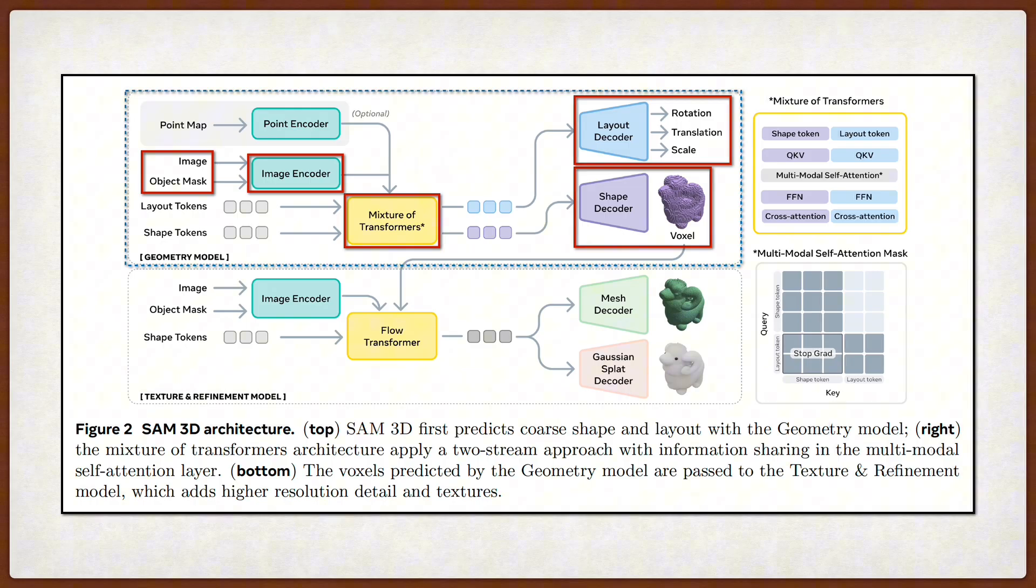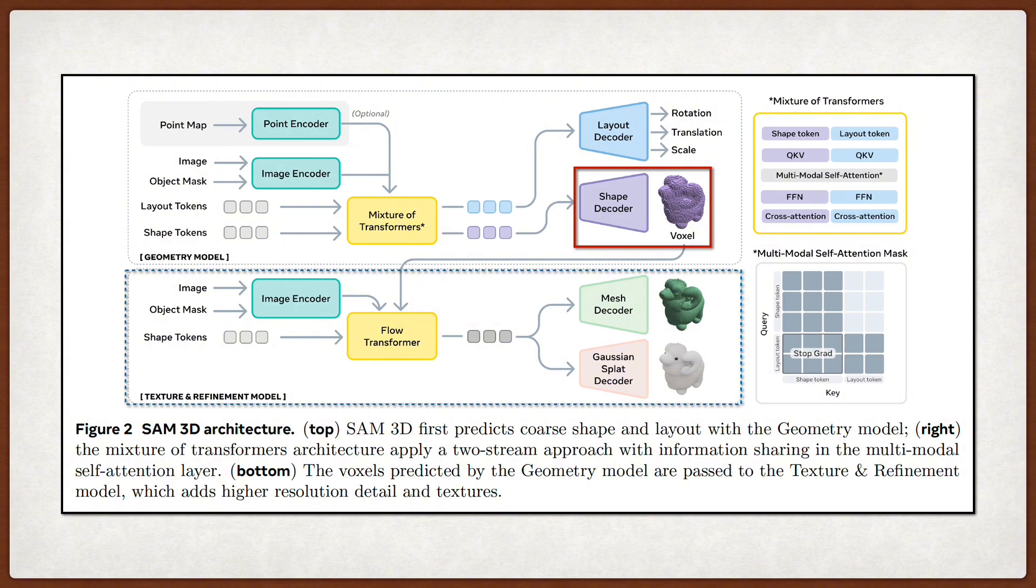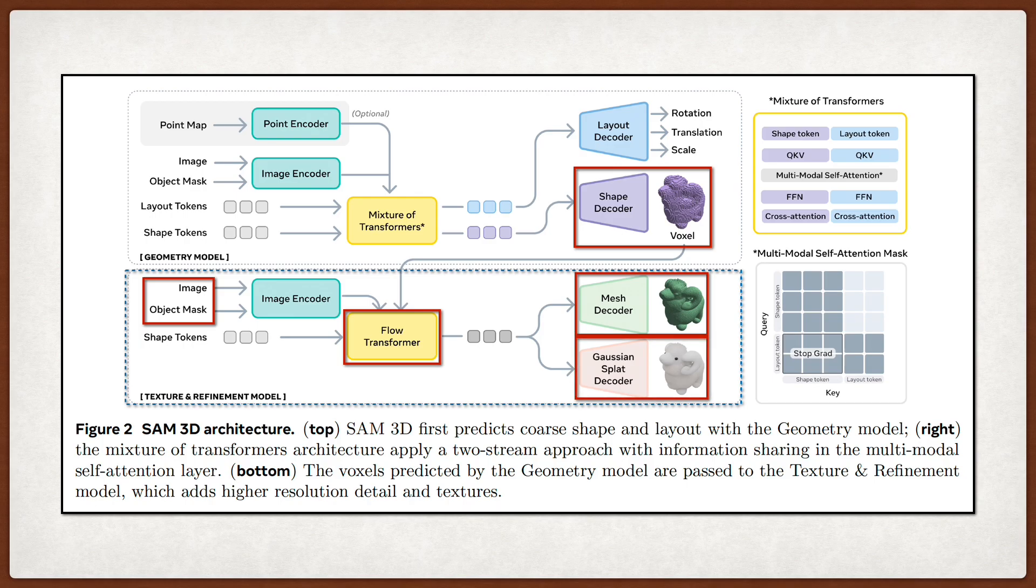Once you have that coarse geometry, the system passes it to the second stage, called the texture and refinement model. This takes the active voxels predicted by the first stage, and uses another sparse latent flow transformer to refine the geometric details and synthesize the object texture. What happens here is that they condition this refinement model on the image and mask again, and the output is a set of latent representations that can be decoded into either a mesh or 3D Gaussian splats, depending on what you need.